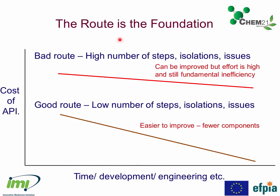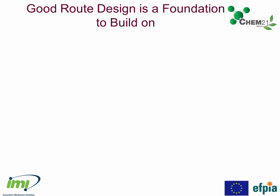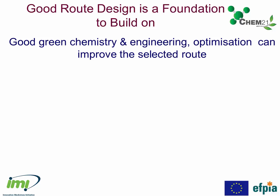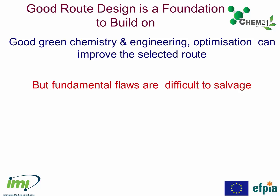To get a really good, efficient process, choosing the route is the foundation. Most processes can be improved in terms of efficiency, costs, and throughput. But choosing a good route — convergent, low number of steps, few isolations, minimum number of unit operations — makes for easier optimisation than a long and inefficient route that has a high number of steps, many isolations, and issues in processing. Good route design is the foundation on which to build. We can use good green chemistry, engineering, and optimisation to improve the selected route, but if we have fundamental flaws, these can be very difficult to salvage.